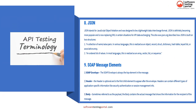JSON stands for JavaScript Object Notation and was designed to be a lightweight data interchange format. JSON is becoming more popular and is now replacing XML in certain situations for API data exchanging. JSON is built on two structures: 1. A collection of name-value pairs. 2. An ordered list of values. A SOAP message has three elements: 1. The SOAP envelope, which is always the top element. 2. The header, which is optional and the first child element after the envelope, and can contain application-specific information like security authentication or session management. 3. The body, also called the payload, which contains the actual message information for the recipient.